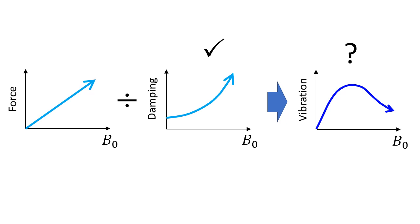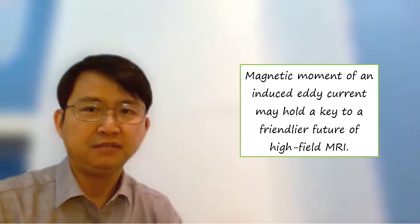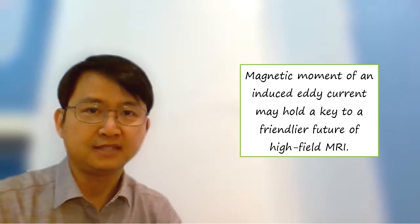We have learned that magnetic damping goes up rapidly with the magnetic field. Can this give us a much needed solution to vibration in ultra high field MRI? Many researchers are trying to answer this question. After all, the magnetic moment of an induced eddy current may hold a key to a friendlier future of high field MRI. Thank you for listening.